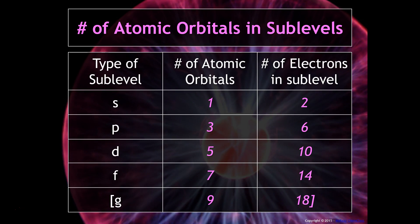These are the number of atomic orbitals in sublevels. For the s sublevel, there's only one type of orbital, or one orientation in three-dimensional space, and it can hold two electrons. For the p sublevel, there are three different atomic orbitals and six electrons total, because each orbital can hold two electrons.